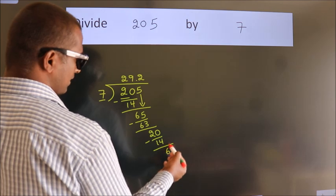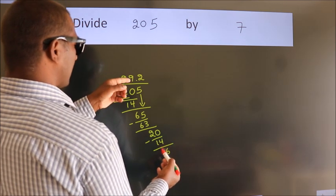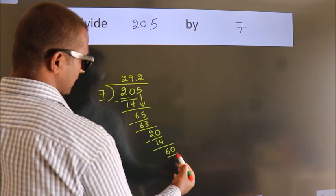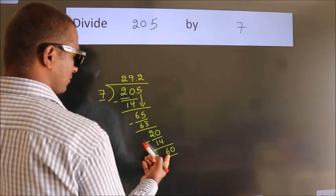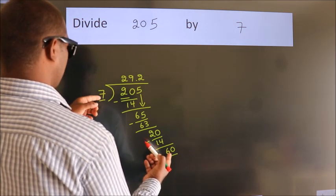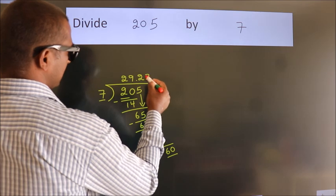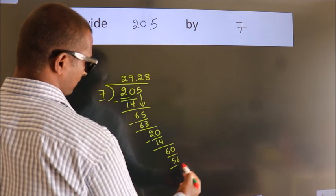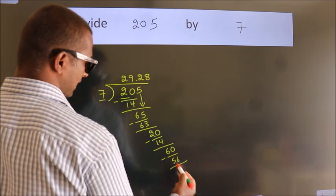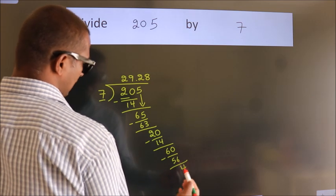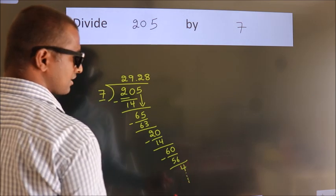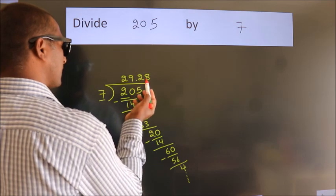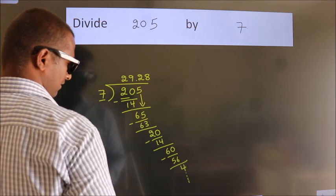After this, we already have the decimal, so directly take 0, giving us 60. A number close to 60 in the 7 table is 7 eights 56. Now we subtract and we get 4, and the division continues. It is enough if we do up to 2 decimal places, so we stop here.